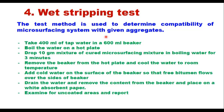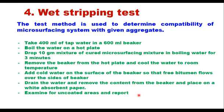The wet stripping test determines the compatibility of the microsurfacing system with given aggregates. Equipment needed: a 600 ml beaker, hot plate with adjustable temperature, absorbent cloth, and high wet-strength paper. About 400 ml of tap water is boiled in the beaker; 10 grams of cured microsurfacing mixture is dropped into boiling water for 3 minutes. After that, remove from heat, cool to room temperature, and add cold water so free bitumen flows over the side. Drain the water, place the content on a white absorbent paper, examine for uncoated areas, and report as the stripping value.